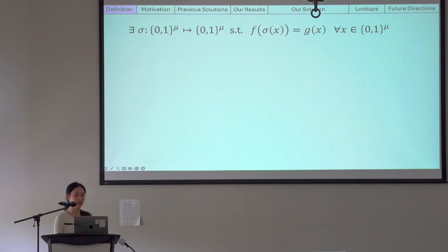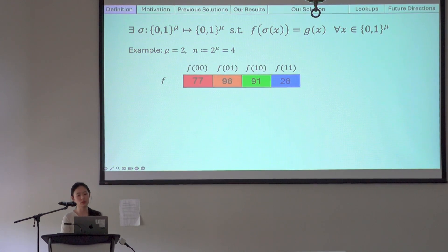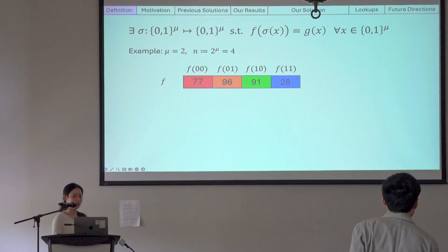Let's look at a quick example. Throughout this talk, I will use mu to represent the dimension of the Boolean hypercube we are working with, and n equals 2 to the mu to represent the number of elements in the permutation. So suppose mu is equal to 2, and therefore n is equal to 4.